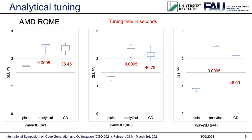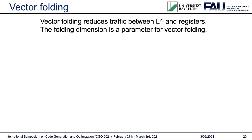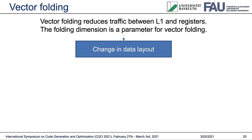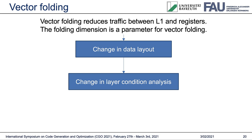Another optimization which YASK uses is vector folding. This optimization reduces the L1-to-register traffic. The folding dimension is a tuning parameter for vector folding. Depending on the folding dimension, an efficient implementation of this optimization requires a change in data layout. The change in data layout means that a modification in layer condition analysis has to be done to reflect this, and the modified layer condition analysis can then be incorporated into the ECM performance model to predict and tune the performance analytically.